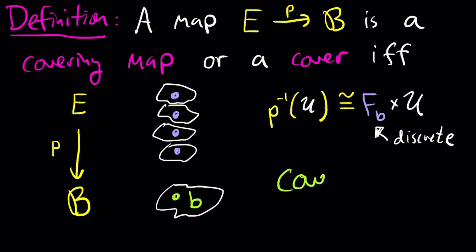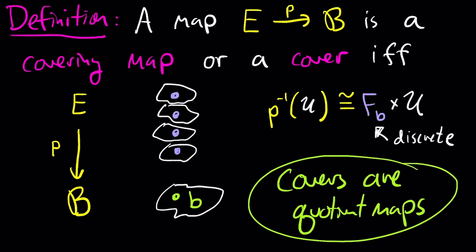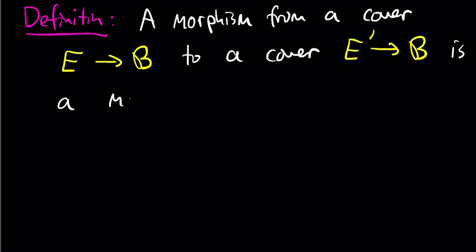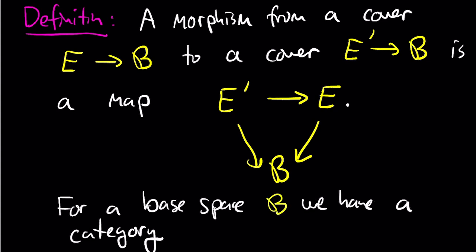More than that, you can check that a covering map sends an open subset of E to an open subset of B and therefore will be a quotient map. So the base of a covering map is precisely the quotient of the total space E where all of the fibers over a point have been identified. Now that you know what a cover is, you might be able to guess what a morphism from a cover E over B to another cover E prime over B is. It's just a continuous function from E to E prime that commutes with the projections down to B.